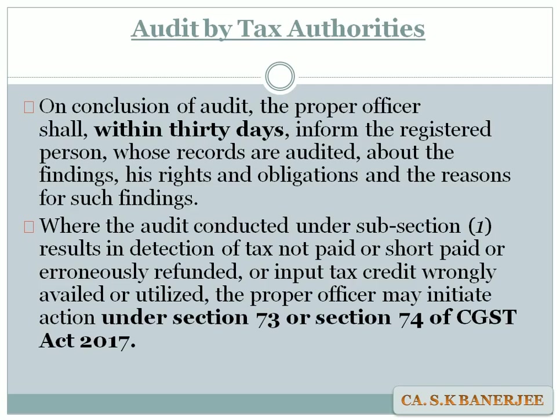The extension by the Commissioner can be a further six months, making the total maximum time limit nine months. When the proper officer concludes the audit, within 30 days he must inform the registered person of his findings, the rights and obligations of such person, and the reasons for the findings. If the audit results in detection of tax not paid, short paid, erroneously refunded, or input tax credit wrongly availed, the proper officer may initiate action under Section 73 or 74 of the CGST Act for recovery proceedings.